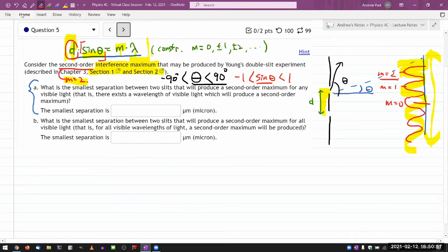Let me just rewrite this equation with the simplification in mind. All right, then let me just consider the extreme case where sine of theta is equal to one. In that extreme case, I have d times one is equal to m lambda. And I have the value of m, that's two.